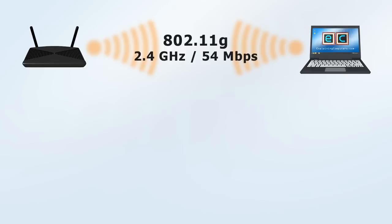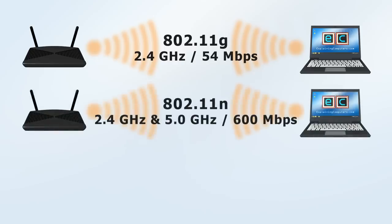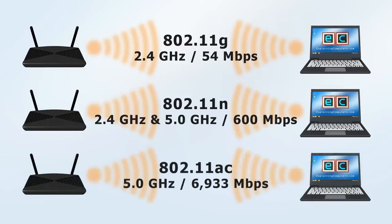Five years later, in 2008, 802.11n was launched. This is a dual-band technology, operating at both 2.4 and 5 GHz, and increased the maximum theoretical data rate to 600 Mbps. 2013 then saw the release of 802.11ac, which operates in the 5 GHz band and delivers a theoretical maximum speed of 6,933 Mbps. In 2016, the Wi-Fi Alliance amended 802.11ac to a second version known as 802.11ac Wave 2, although the maximum theoretical data rate remained the same.